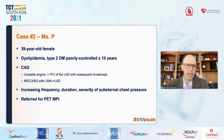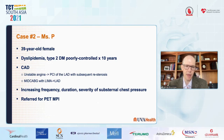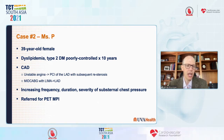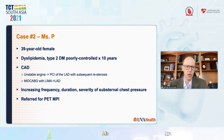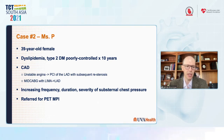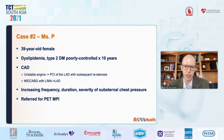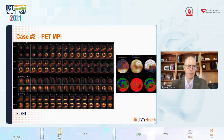Case number two: Ms. P is a 39-year-old female with dyslipidemia and type 2 diabetes mellitus poorly controlled for approximately 10 years and known CAD. She had unstable angina and PCI of the LAD with subsequent restenosis, ultimately undergoing minimally invasive CABG with placement of LIMA to the LAD. She developed increasing frequency, duration, and severity of substernal chest pressure and was referred for PET-MPI.